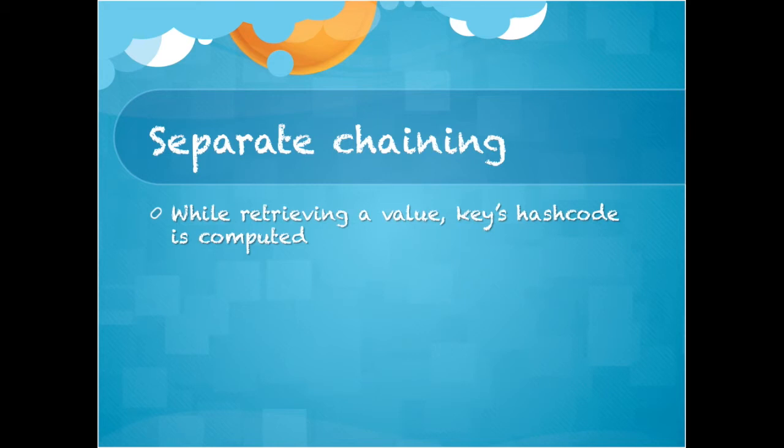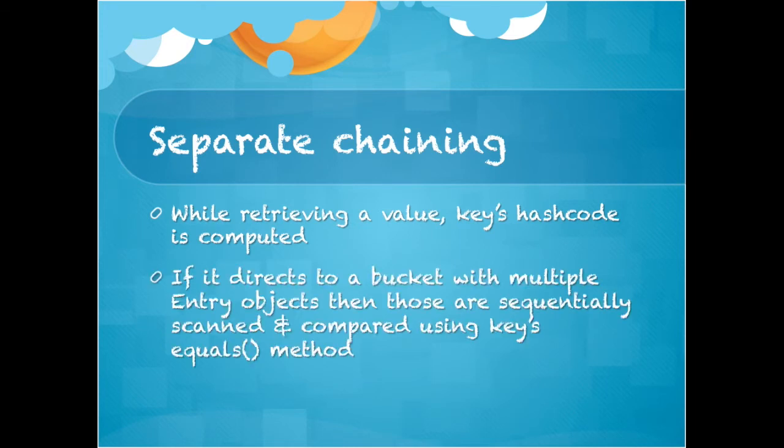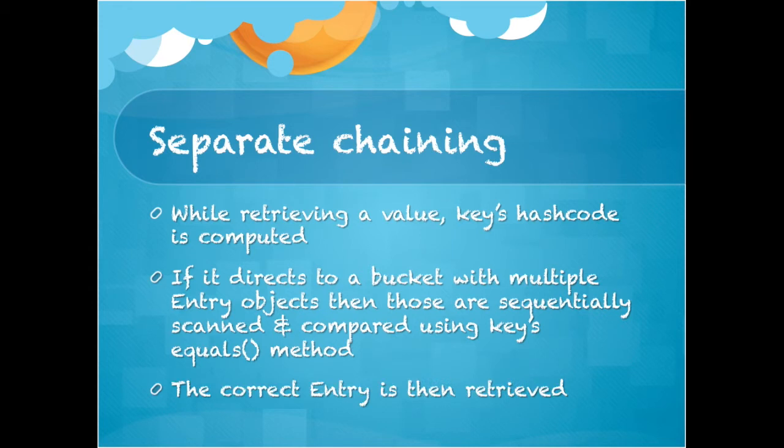While retrieving the value stored in the hash table, the key's hash code is computed. If it directs to a bucket with multiple entry objects, then those are sequentially scanned and compared using the key's equals method. This is how the correct entry is then retrieved.